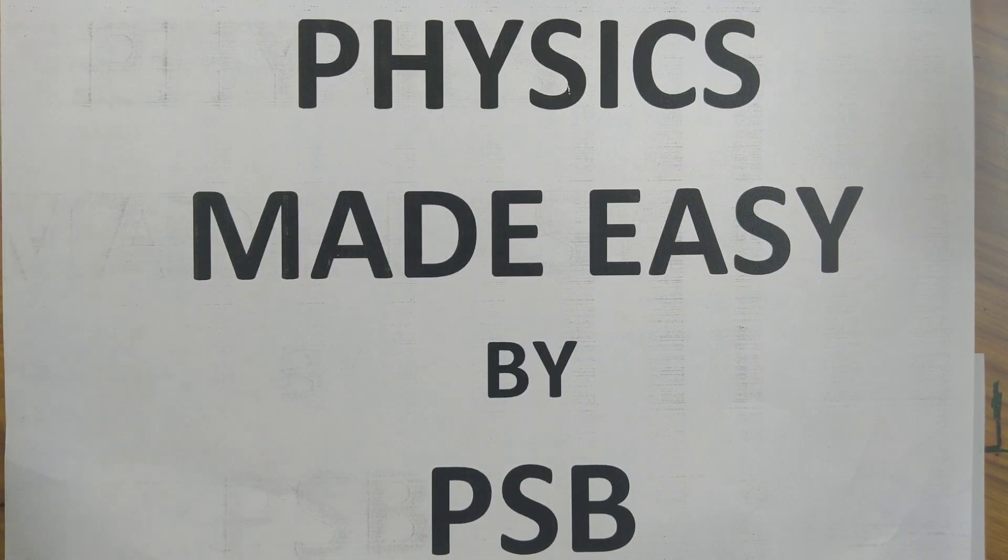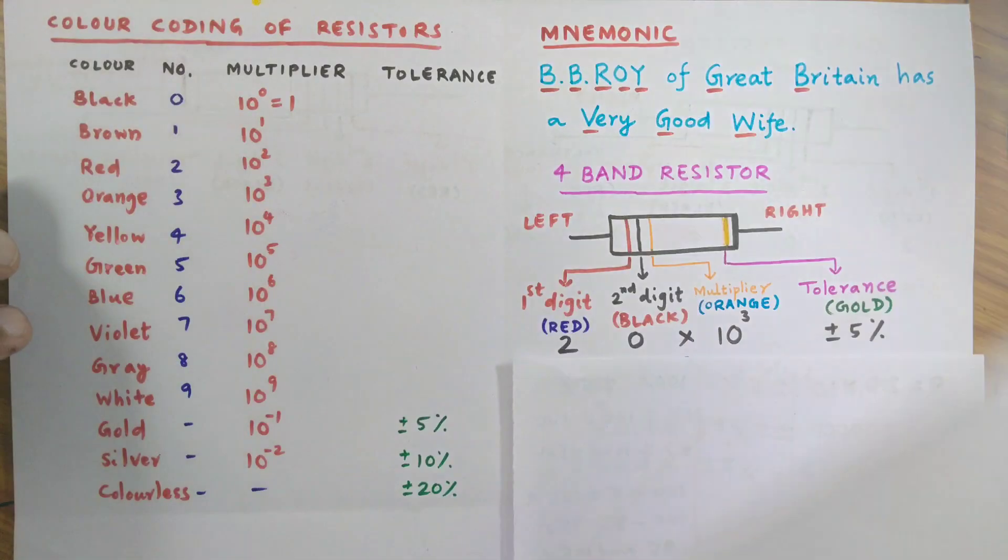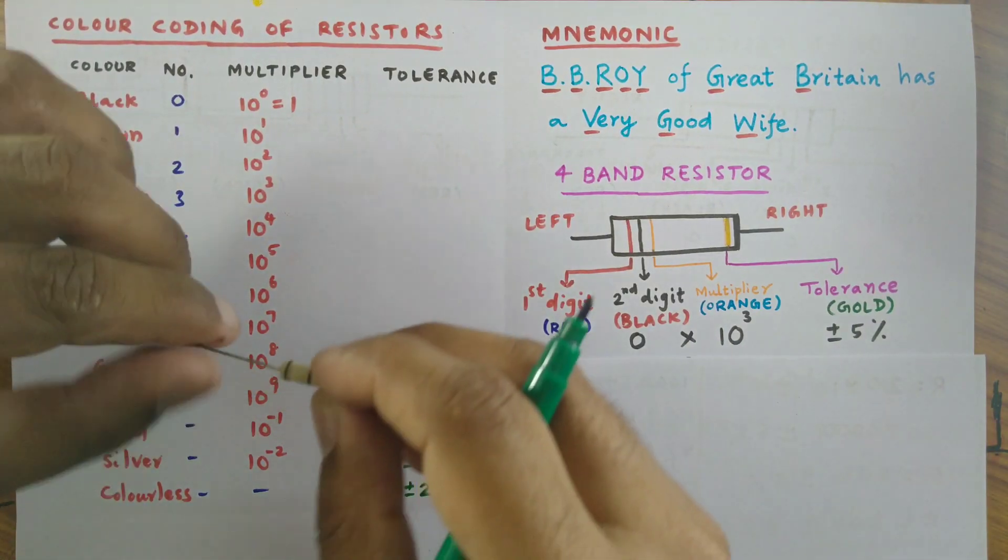Assalamu alaikum. This video will show you how to find the value of a resistor. Usually carbon resistors are provided with colorings that you can see here.